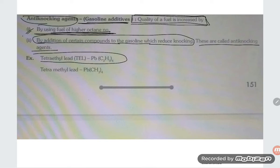And tetramethyl lead is also being used nowadays as an anti-knocking reagent. When you are using these two components in the petrol, what will happen?